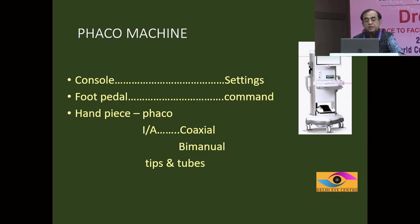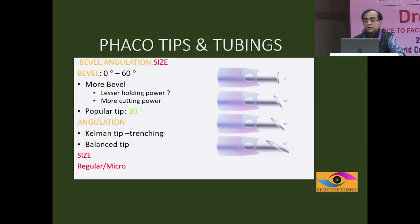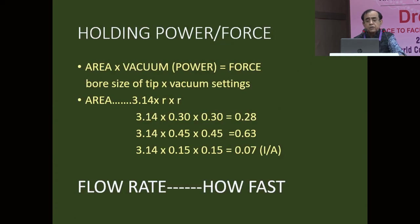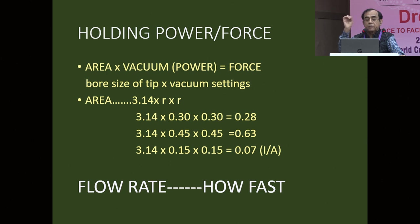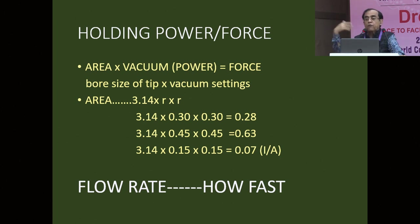We mostly use a 30-degree tip and settings depend upon the type of machine. The holding power of the nucleus depends upon the bore size of the tip — force equals power times area. When you use a larger bore tip versus a smaller one, holding power may increase by three times. In tough cases like hard cataracts, you need a bigger bore. Flow rate decides how fast things happen, and how strongly you hold depends upon your vacuum.